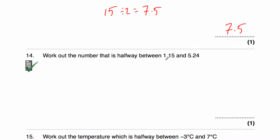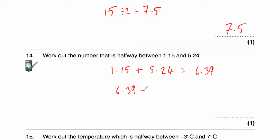Question fourteen says: work out the number that's halfway between 1.15 and 5.24. So 1.15 plus 5.24 — it's a calculator question — equals 6.39. Now divide by 2: 6.39 divided by 2 is equal to 3.195. So the answer is 3.195.